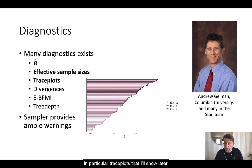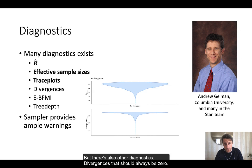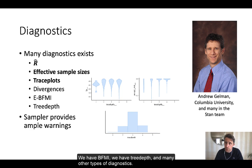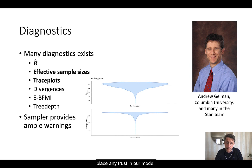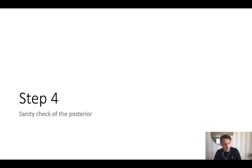Finally, we have plots, in particular trace plots, that I will show later. But there are also other diagnostics: divergences, which should always be zero. We have BFMI, we have tree depth, and many other types of diagnostics. The point here is that we should always check these diagnostics, because they are an indication if we can place any trust in our model.